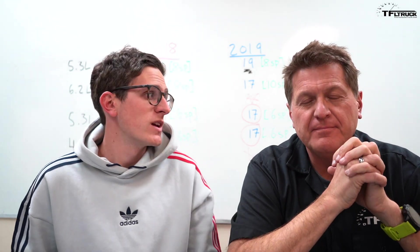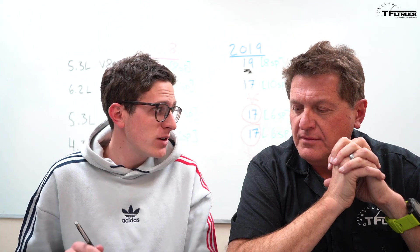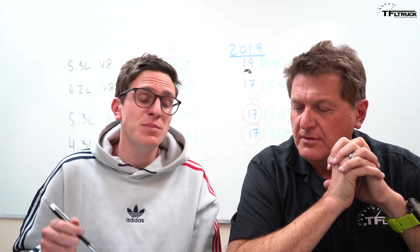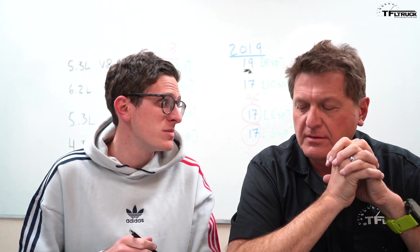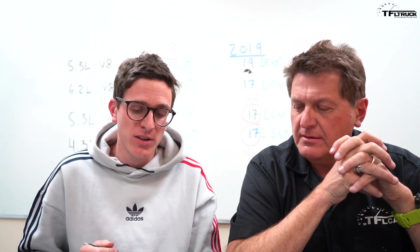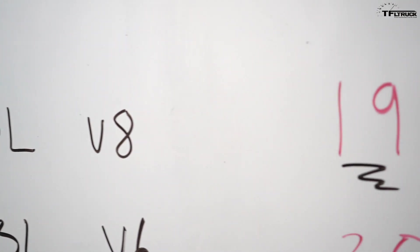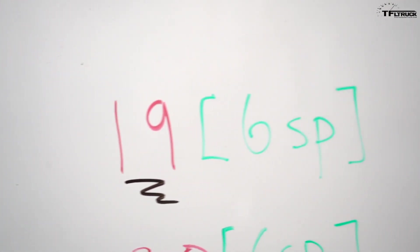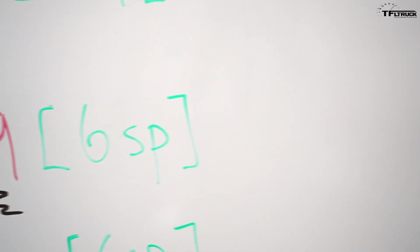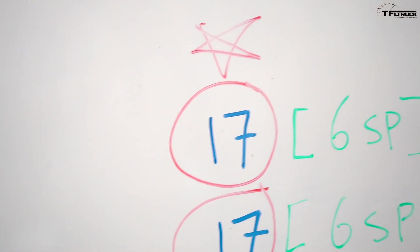This is where it gets even more interesting. On the 2019 truck you can get a 5.3 liter V8 with a 6-speed automatic and essentially the old active fuel management. For this level of comparison we're talking about the 18 and the 19, both with the 5.3, both with the 6-speed automatic, and both with active fuel management. We see a pretty surprising discrepancy in fuel economy numbers.